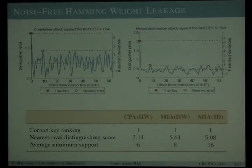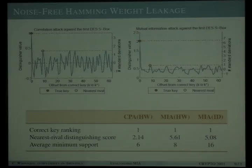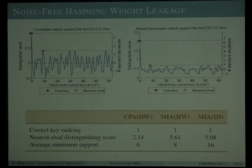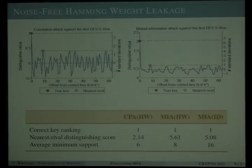We first consider a baseline example of noise-free Hamming weight leakage of the first DES S-box, a scenario particularly favorable to correlation DPA with a known Hamming weight power model. Even so, MIA has a theoretic advantage: it isolates the correct key from the nearest incorrect hypothesis by a substantially larger margin, achieving a nearest rival score over twice the size of the correlation vector. However, MIA needs more plaintext inputs to distinguish the key. Combined with the high costs of estimating non-parametric statistics, this explains why it is usually less efficient in practical comparisons — it isolates the true key more profoundly, just not in a way that can necessarily be exploited in practice.